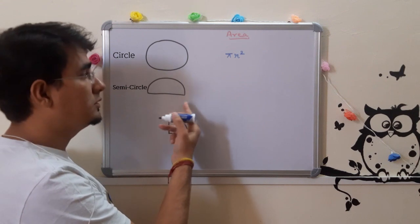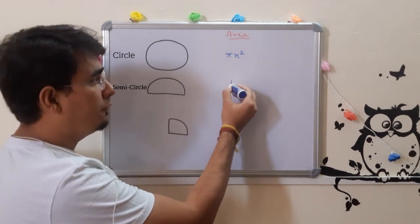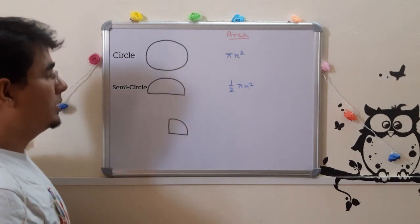This shape is a semi-circle. What is the formula? ½ π r². You know this type. Very easy.